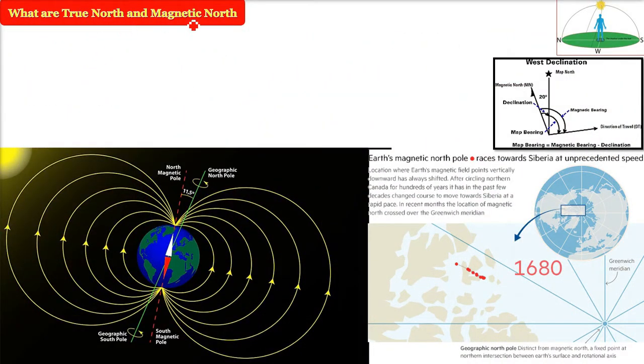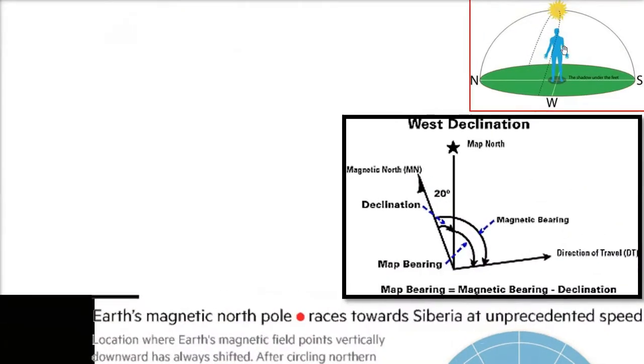What are true north and magnetic north? The sun rises in the east and it sets in the west.